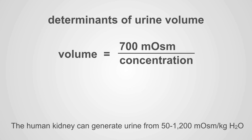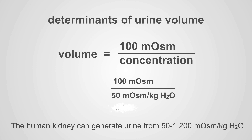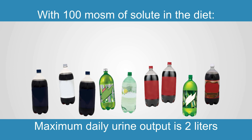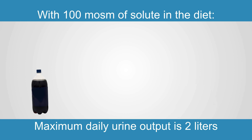But what if the patient is on a profoundly abnormal diet and only eats 100 mOsm per day? With minimal ADH, they will only make 2 liters of urine a day — normally it would be 14 liters. That means their maximum urine output is only 2 liters, and if they drink more than that, they will develop hyponatremia.